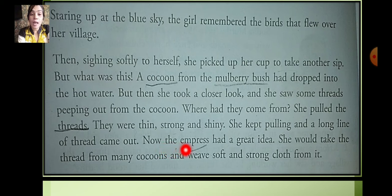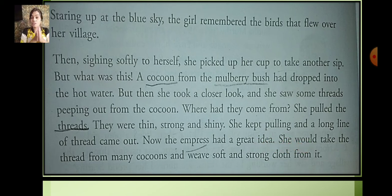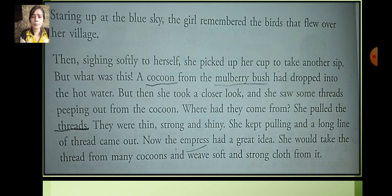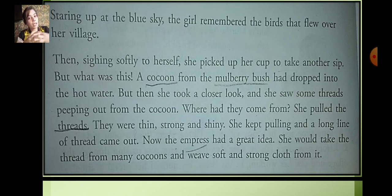Now the empress had a great idea. She would take the thread from many cocoons and weave soft and strong cloth from it. So the empress took the cup very close to have a look at what it was, and she saw thread coming out. She started pulling and pulling — the threads were very thin, very strong, and shining. She kept on pulling and a long line of threads came out. She started collecting many cocoons, gathering a lot of threads, and got the idea of weaving soft and strong cloth from them.